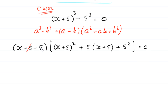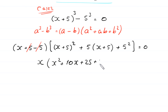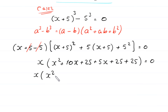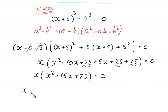Now the positive 5 and negative 5 cancel, leaving x. Expanding (x + 5)² + 5(x + 5) + 25 gives x² + 10x + 25 + 5x + 25 + 25, so we have x times (x² + 15x + 75) is equal to 0.